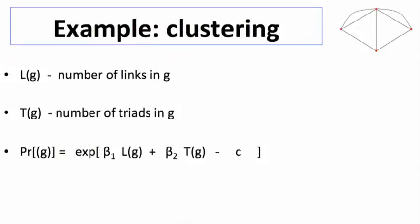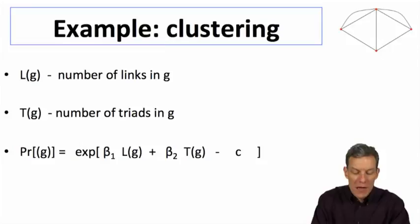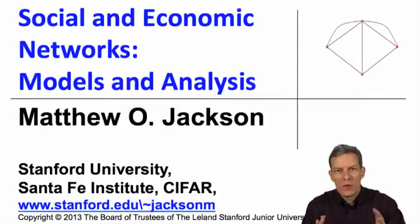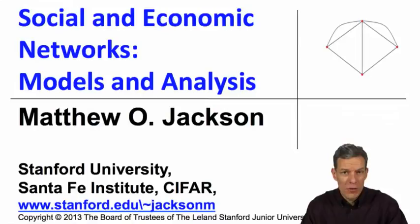When we want to bring in clustering now, we're going to have some other factors beta one, beta two, and we'll have the probability of a graph be proportional to that. This sets up the basic functional form for an exponential random graph model, and the next thing we're going to discuss is what are some of the challenges associated with doing that.